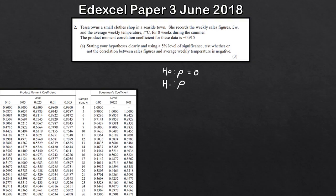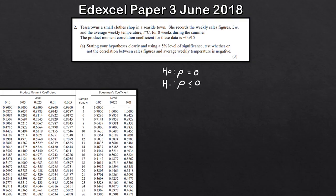To decide whether H1 is greater than or less than, just read the question carefully. Part (a) says to test whether or not the correlation between sales figures and average weekly temperature is negative. So we're saying rho is less than zero — if it's less than zero, it's negative. If we were testing for positive correlation, it would be greater than zero.